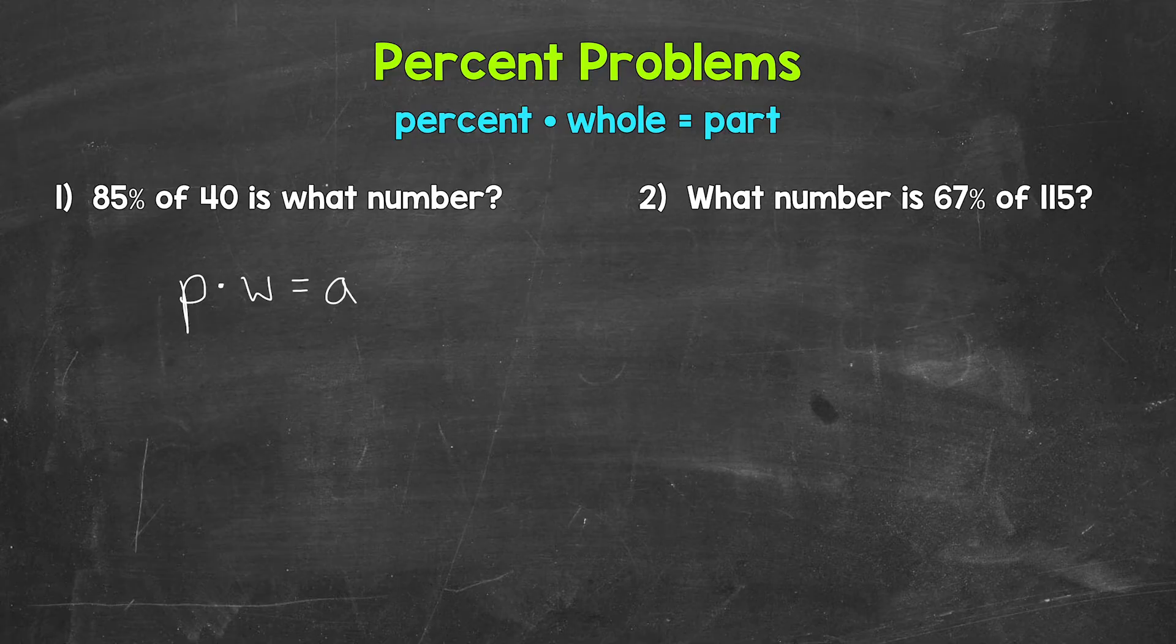For example, number one, we have 85% of 40 is what number? So 85% of 40, there's our percent and whole, is what number? So the part is unknown. Basically, we have 85% of 40 is what part of 40?